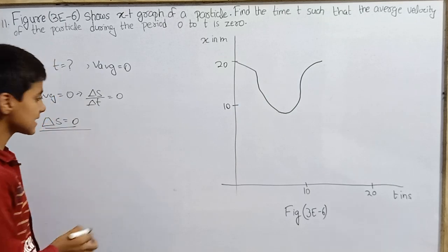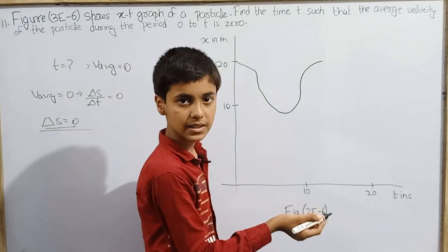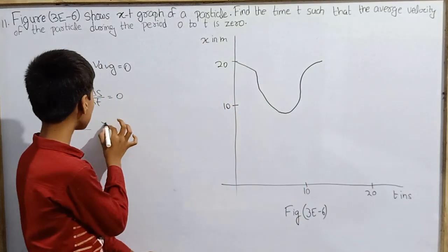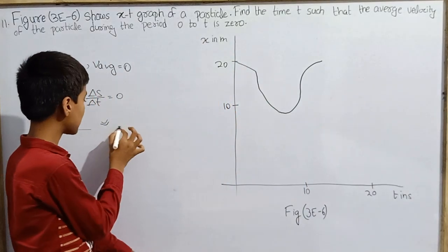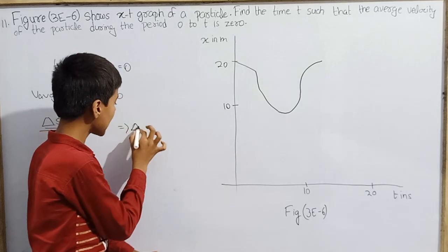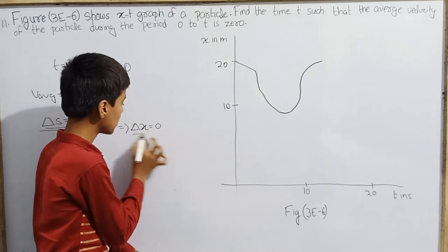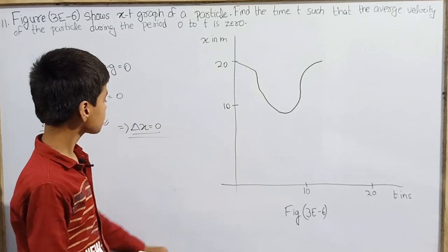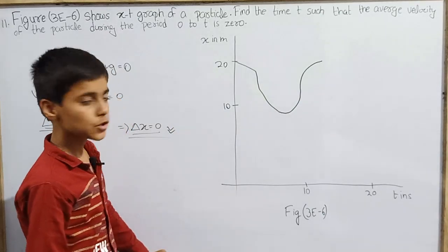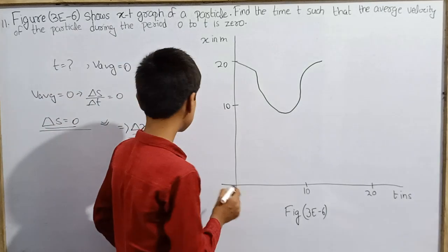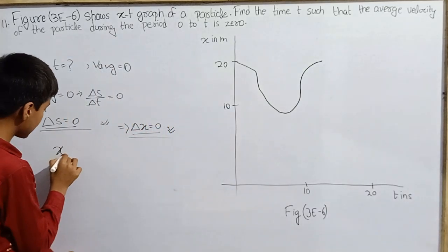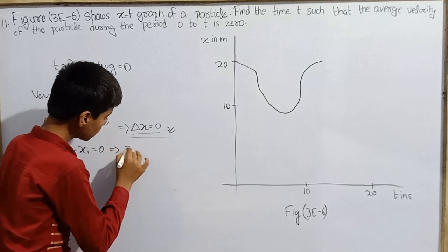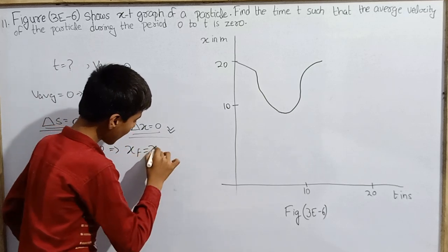Delta S is 0 at such an instant. If we write delta X equal to 0, because this is motion along the X-axis, and if delta X is 0, we can conclude that the change in X is 0 — meaning X_final minus X_initial equals 0, so X has the same value.